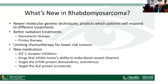What's new in rhabdomyosarcoma: newer molecular genetic techniques allow us to identify which patients will respond better to different treatments, better radiation including proton beam, limiting chemotherapy for lower-risk tumors, and newer medications. These include IGF-1 receptor inhibitors, drugs that inhibit the tumor's ability to make blood vessels such as bevacizumab, and drugs targeting the mTOR protein and the ALK protein.